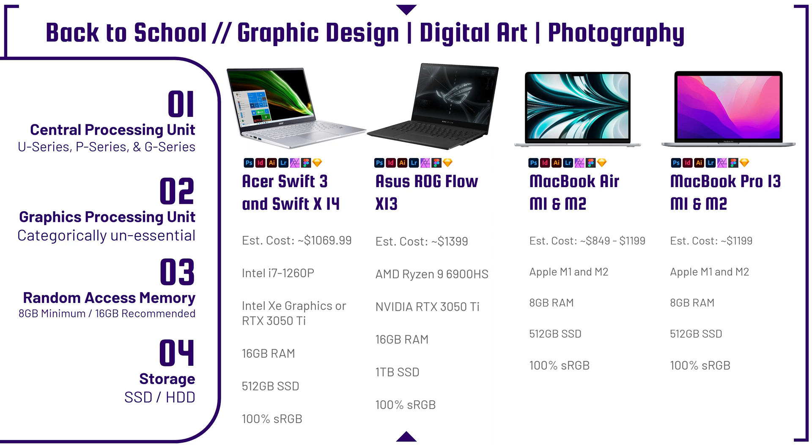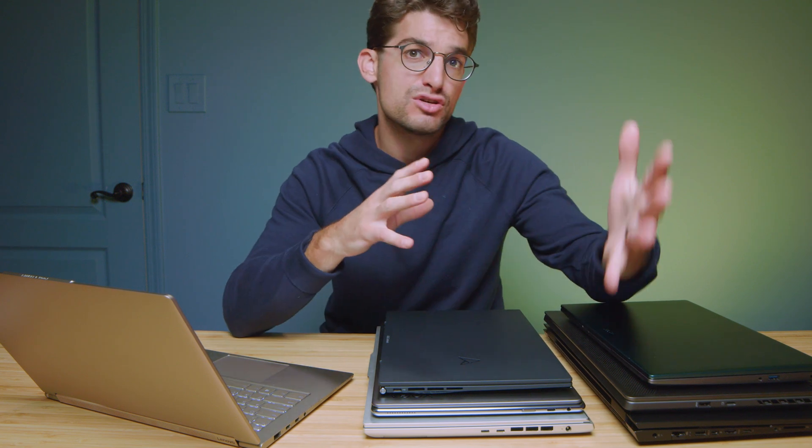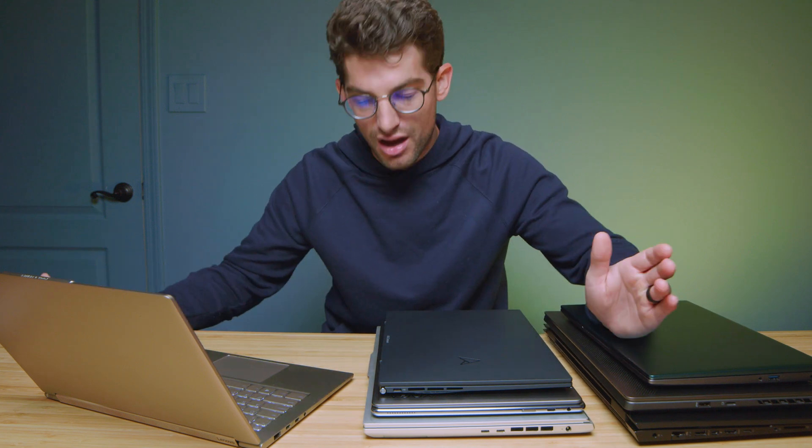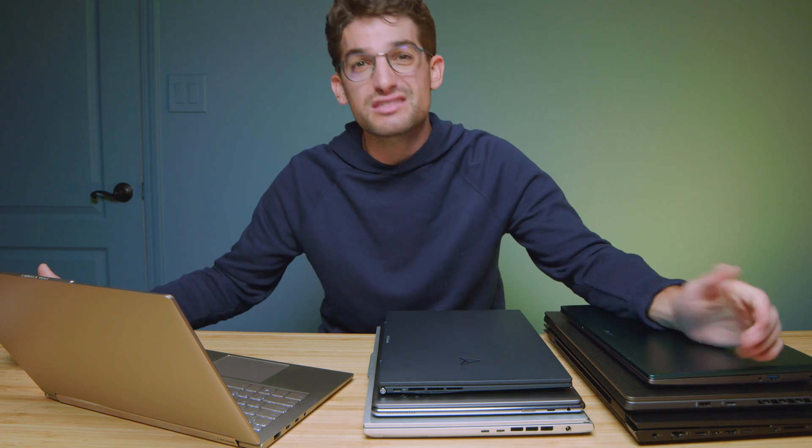Random access memory — RAM — is very important for graphic designers, digital artists, and photographers, and often gets overlooked. Every time you open a program, you're using RAM. A Google Chrome tab alone uses two to five gigs; your system itself uses one to two gigs at startup. So you're already eating up most of 8 gigs before you even open a design or photo app. That's why I recommend 16 gigs as a minimum. If you want a lot of multitasking capability, get 32. Most budget-friendly laptops come with 8 to 16 gigs.